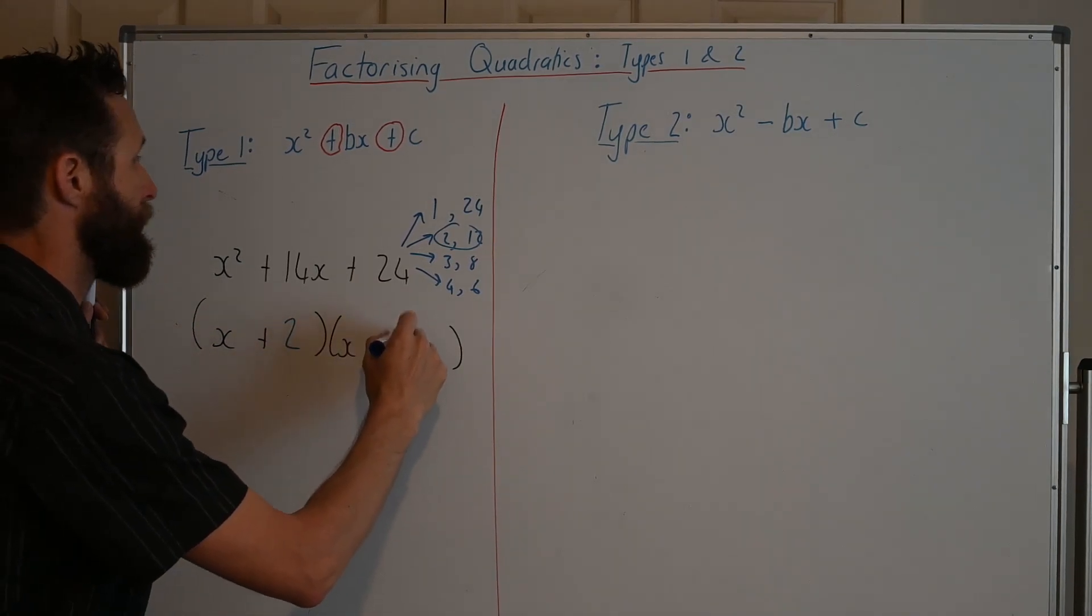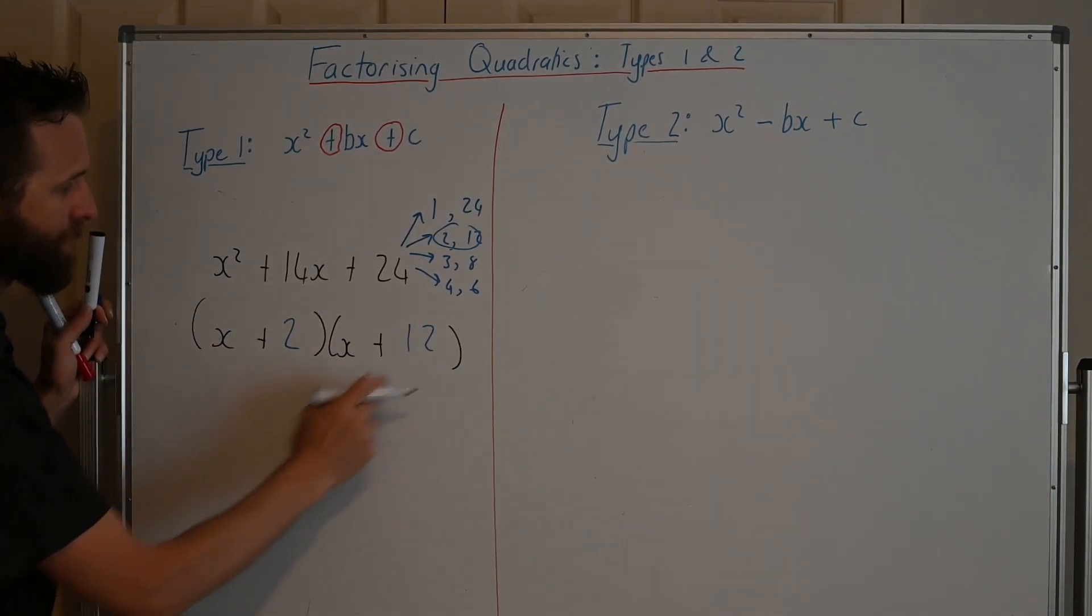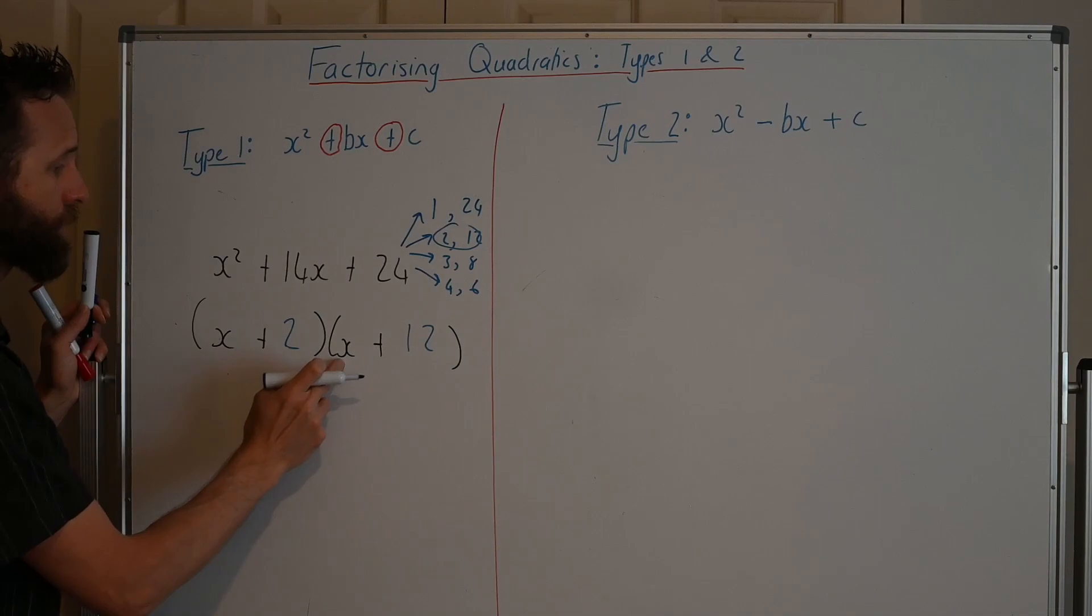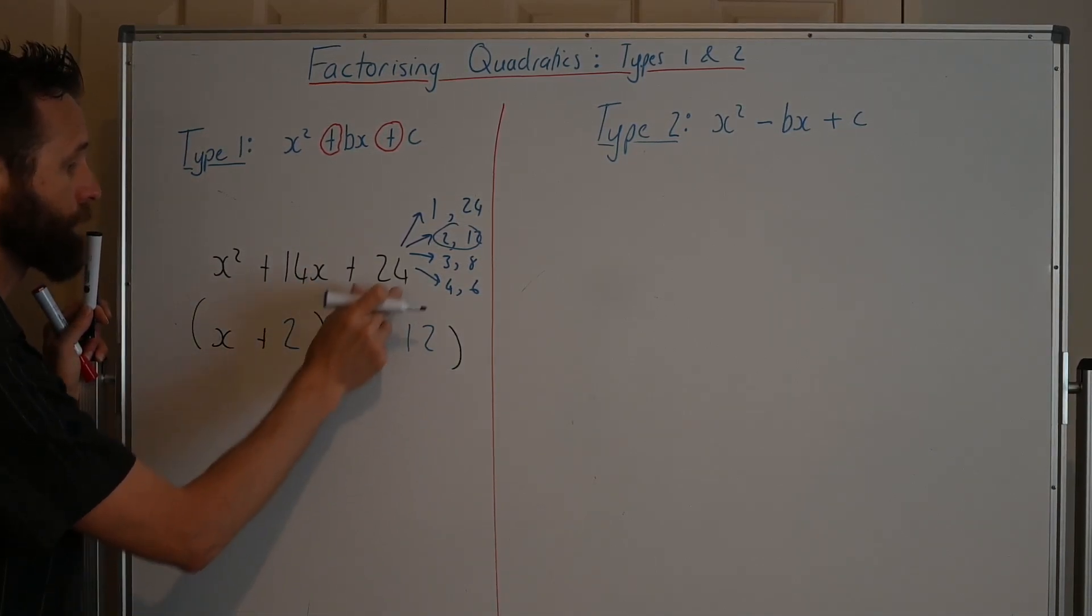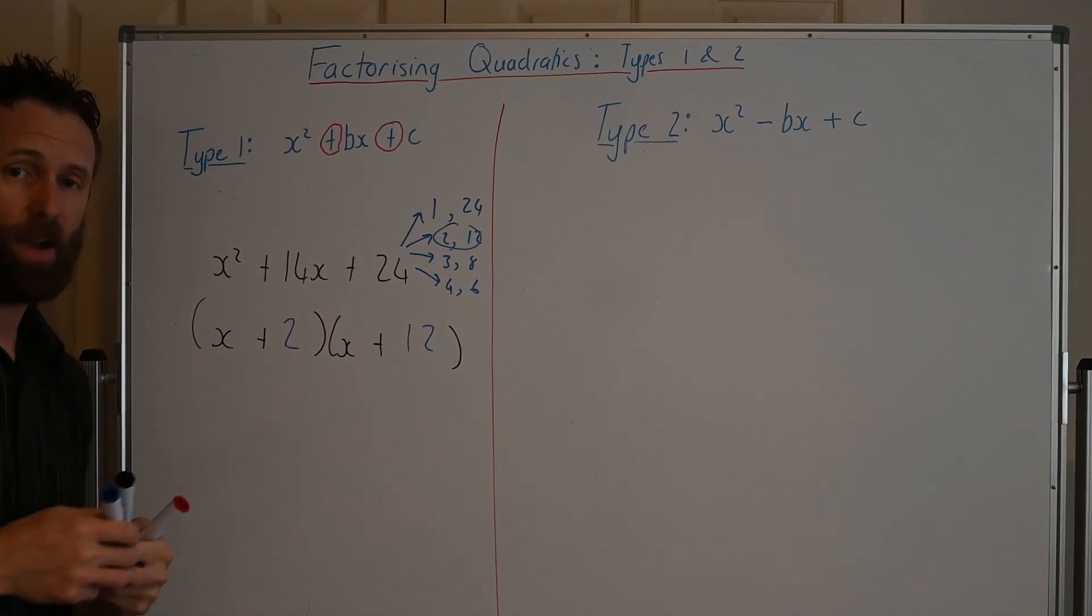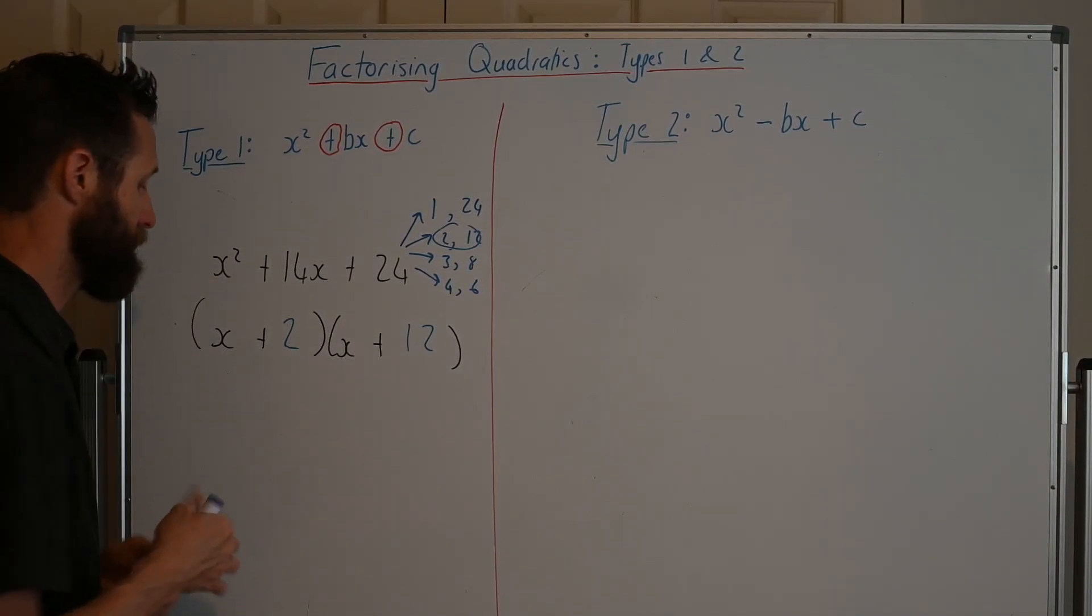So we're going to go (x + 2)(x + 12). Outers, 12x. Inners, 2x. 12x and 2x is 14x. And then 2 times 12 is 24. So we've factorized that one. So I hope that makes sense to you.